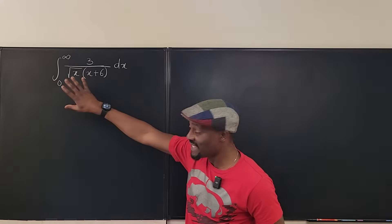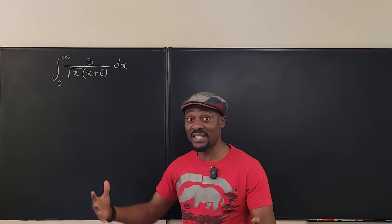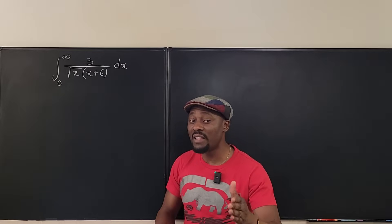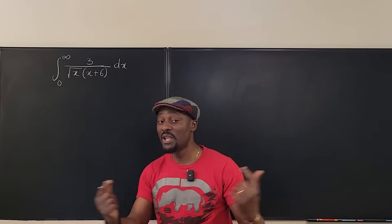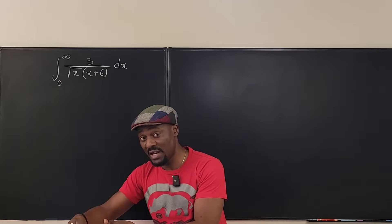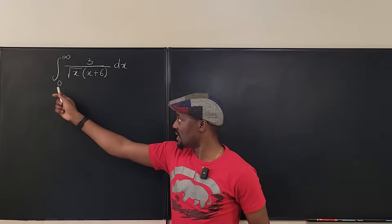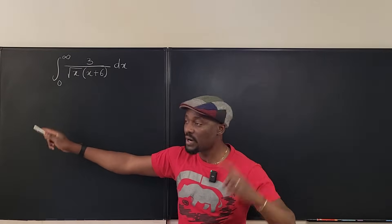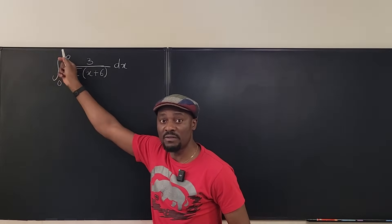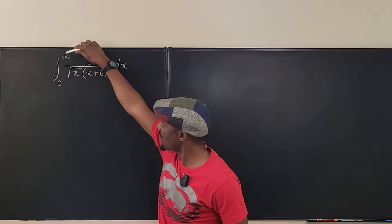So this is a proper improper integral — I said 'proper' because it contains the two types we usually talk about. It is either you have a vertical asymptote within the interval you're integrating over, at the beginning, middle, or end — in this case it's at the beginning — or one or both of your bounds of integration will be infinite, which is also the case here.